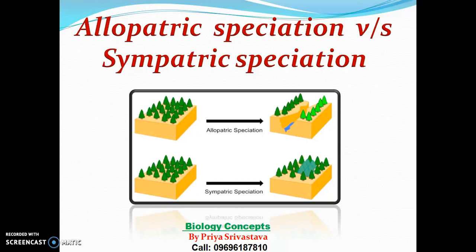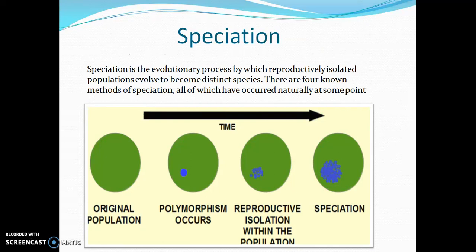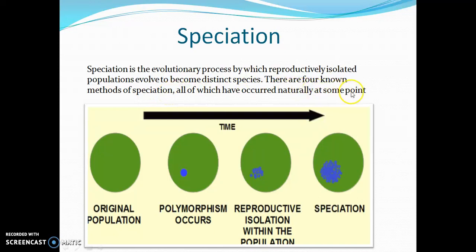So what exactly is speciation? Speciation is the evolutionary process by which reproductively isolated populations evolve to become distinct species. There are four known methods of speciation, all of which have occurred naturally at some point.